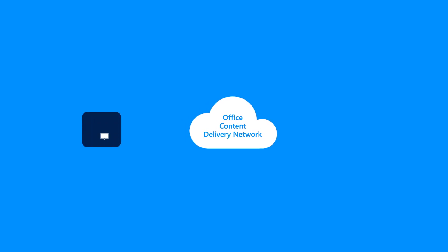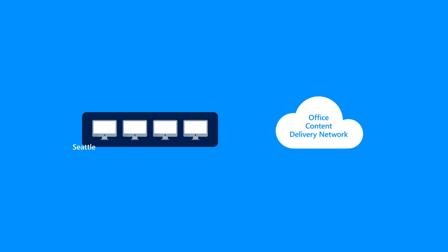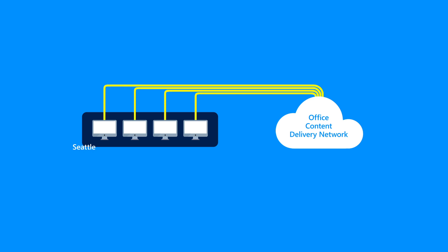In our first video in this series, I talked about how and when updates occur, and you learned that the production channel updates in the middle of each month. Microsoft Auto Update is running on each of these Macs and will independently detect and download updates. This gives each Mac autonomy and fully leverages the content delivery network maintained by Microsoft. Because the CDN has thousands of nodes worldwide, Macs, even in a different city, will contact a local CDN node to get its updates.